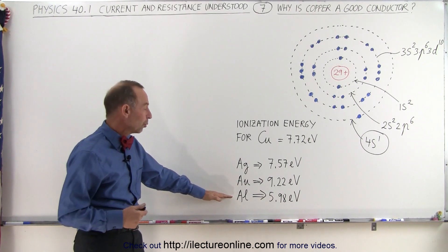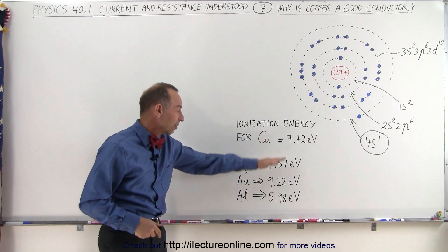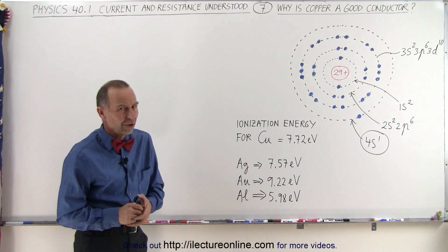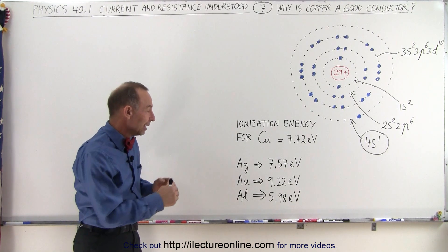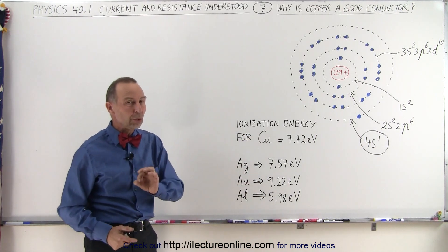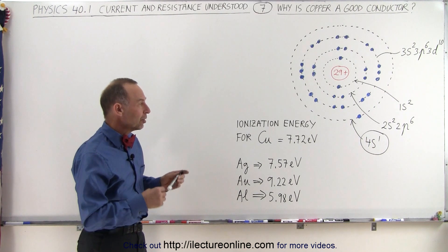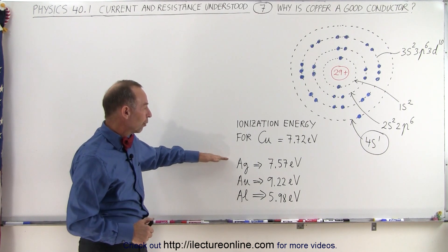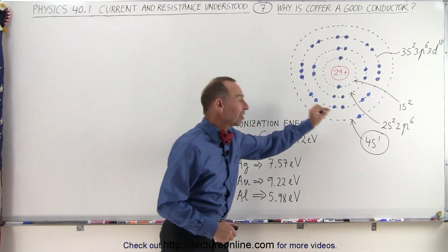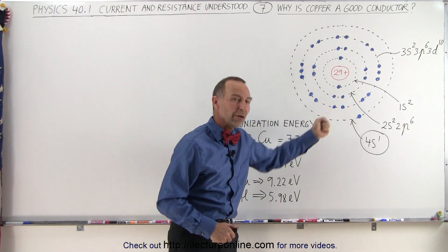Now aluminum is kind of an unusual one here. It has the lowest ionization energy of the four, but it's actually the worst of the four conductors. So there's another property there that determines conductivity. This is just one of them, but not the only one. But you can see for all three—copper, silver, and gold—we end up with a single electron in the s orbital, so easily removed.